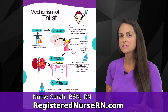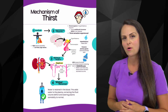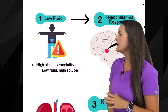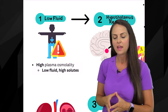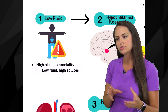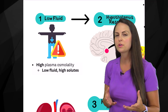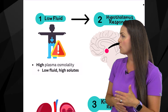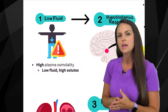Let's review how the thirst mechanism regulates fluid in our body. Whenever this mechanism is stimulated, it's because of low fluid in the body. Whenever you have low fluid in the body, think about your blood plasma's osmolality — it's going to be high because you have a low amount of fluid but a lot of solutes.